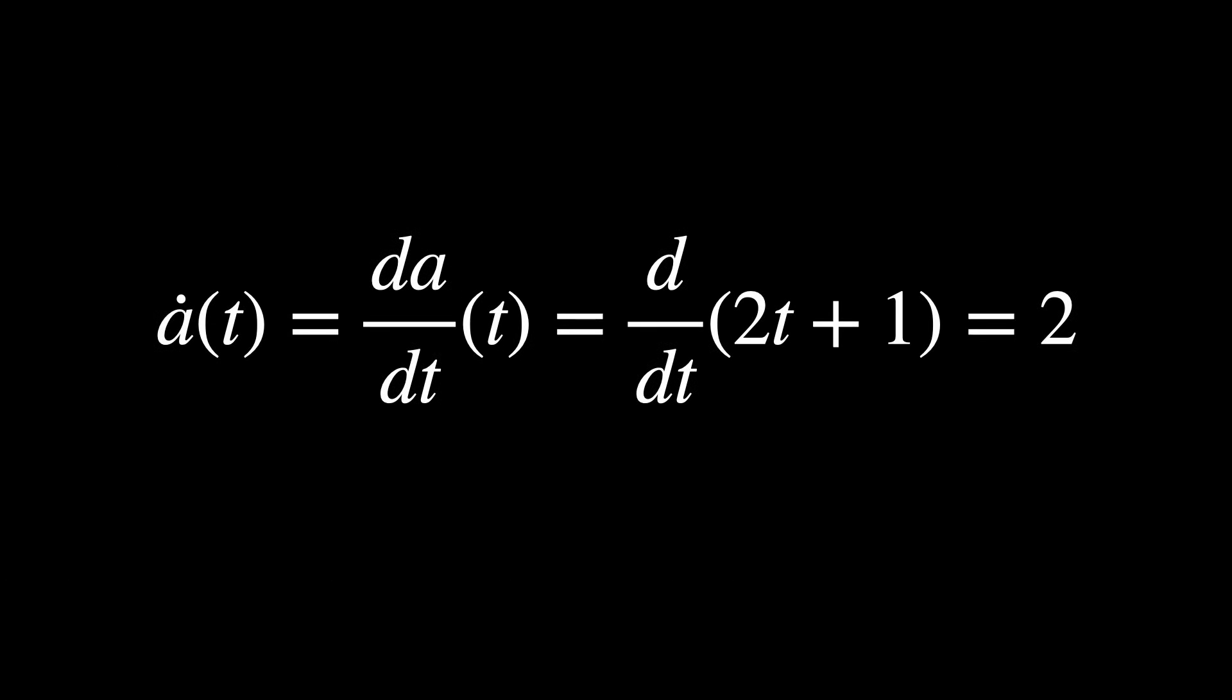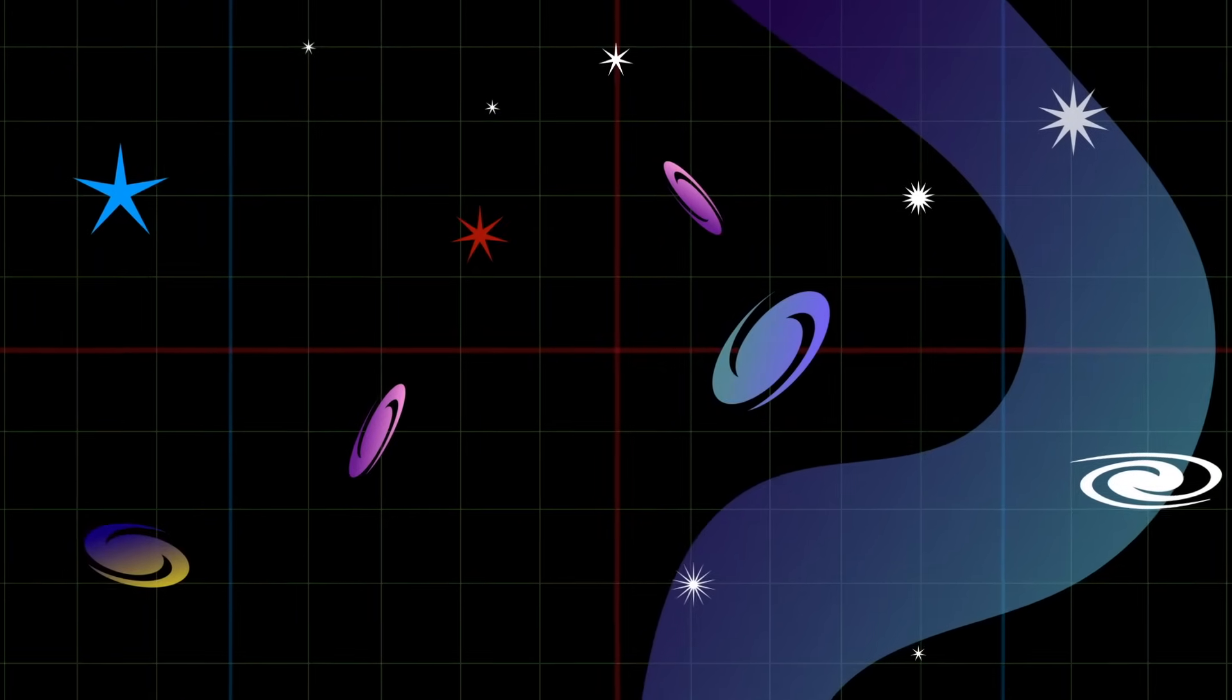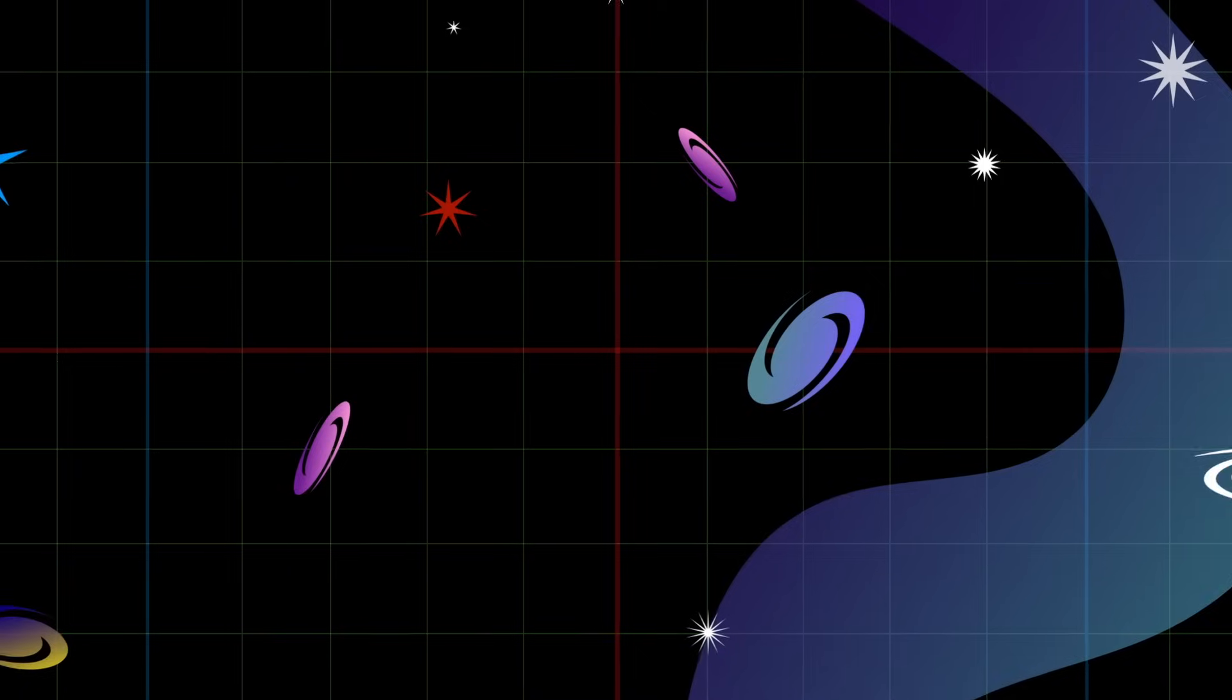As mentioned earlier, the expansion rate is calculated with the derivative of the scale factor with respect to time. So, taking the derivative of 2t plus 1, we get 2. And therefore, for each second, the distance between all points increases by a factor of 2 per unit distance.